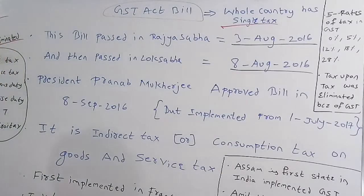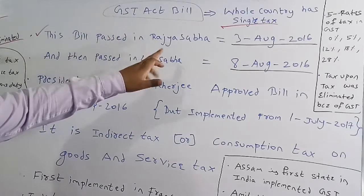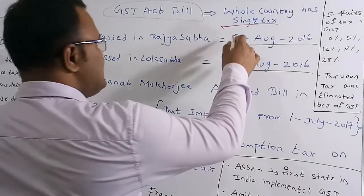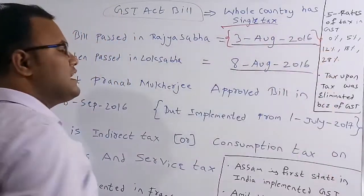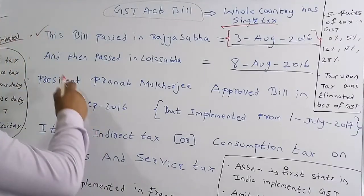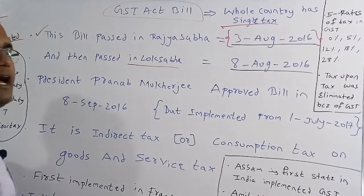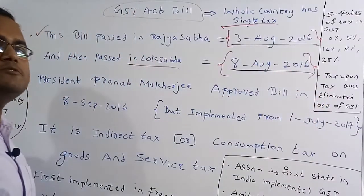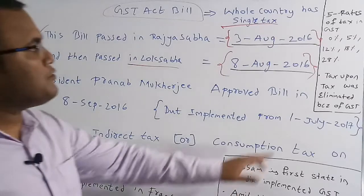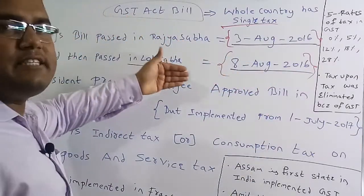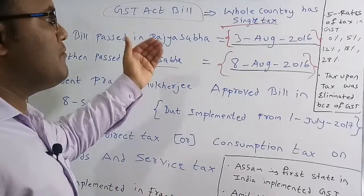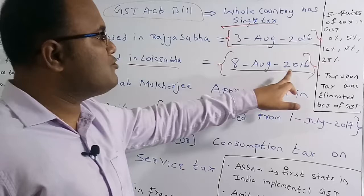This bill was passed in the Rajya Sabha on 3rd August 2016, and it was passed in the Lok Sabha on 8th August 2016. Since Parliament consists of both Rajya Sabha and Lok Sabha, we conclude that GST was passed in Parliament in the year 2016.